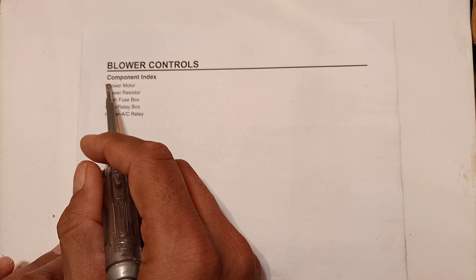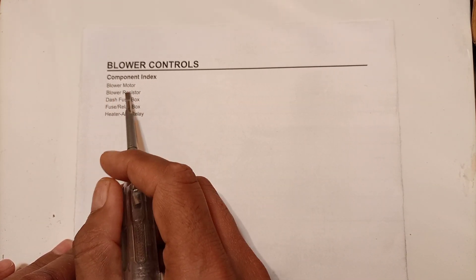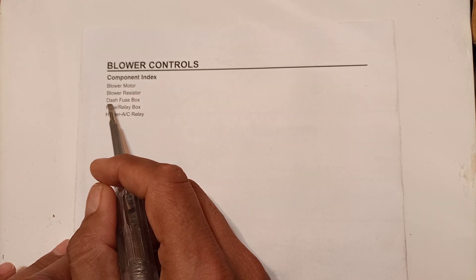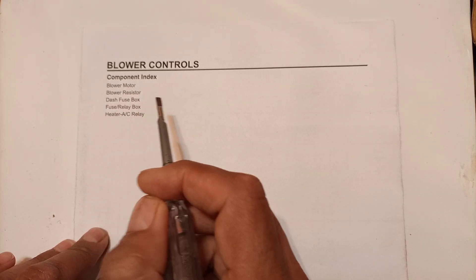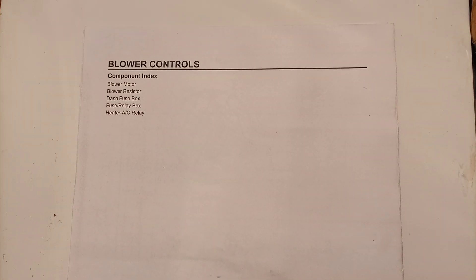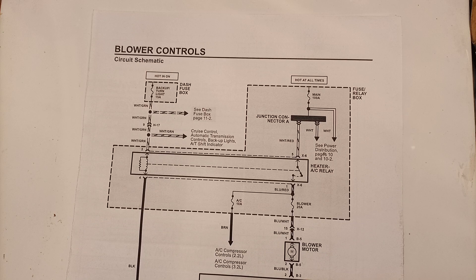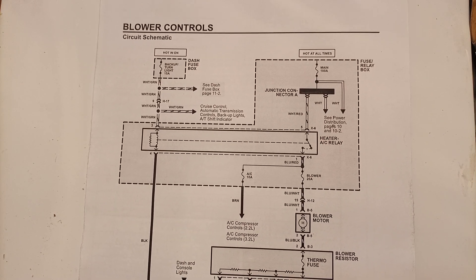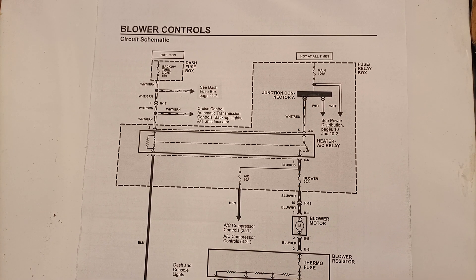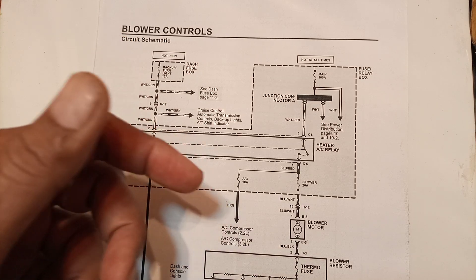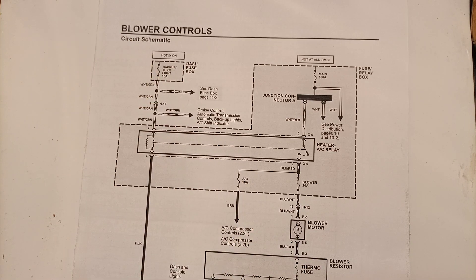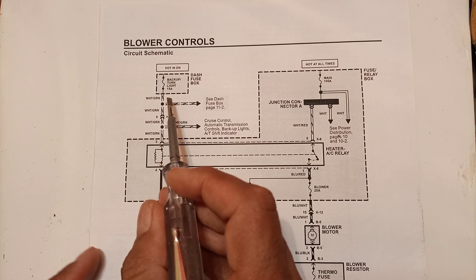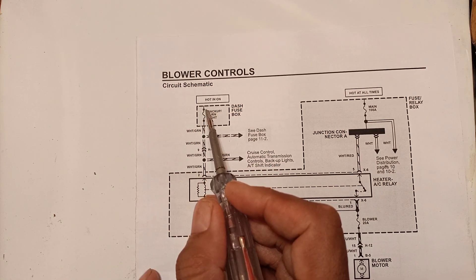Here you can see the component index: blower motor, blower resistor, dash fuse box, fuse relay box, heater AC relay — all these components will come into our discussion while we discuss the schematic diagram. Here is the electrical circuit diagram. Before going further, please like this video, subscribe to my channel, and press the bell icon so you will get notifications for each upload.